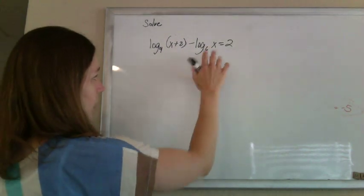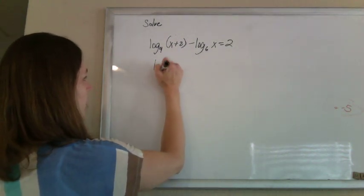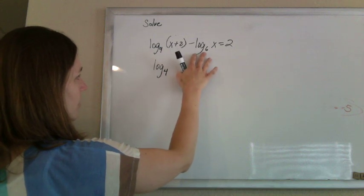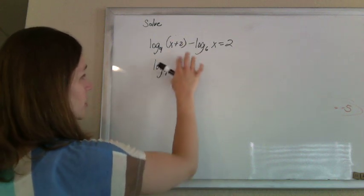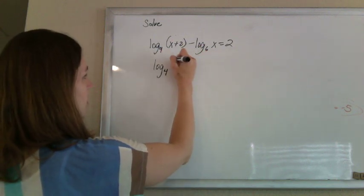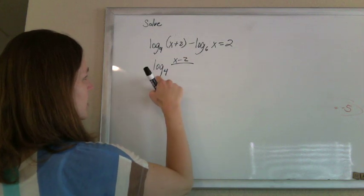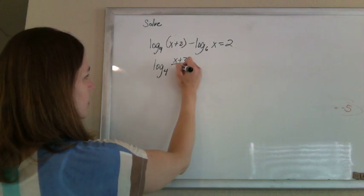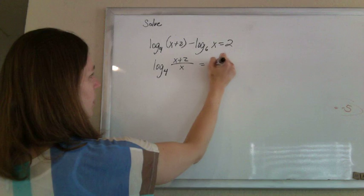Alright, again, two logs, smoosh them into one using our properties of logs. If logs are subtracting as a single log, they'll be dividing. So a single log of x plus 2 divided by x will equal 2.